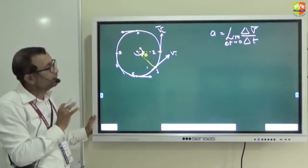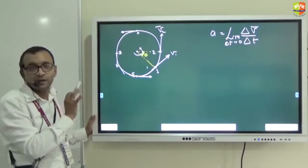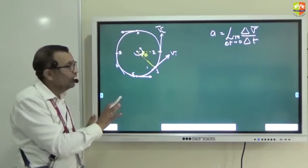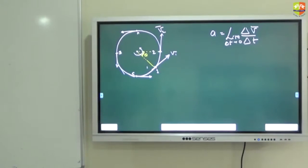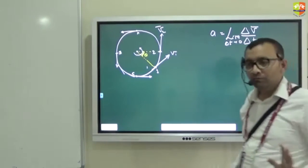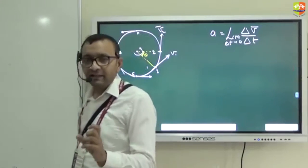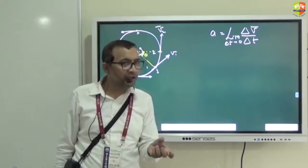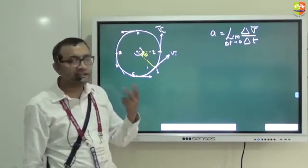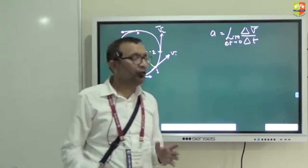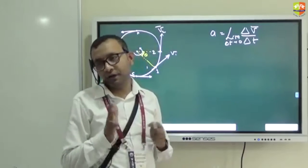This is very important, so I am going extremely slow. Now please draw the vector diagram showing v2 minus v1. Is the length of v1 the same as the length of v2? Length denotes the magnitude of a vector. My magnitude of velocity is fixed, so the length of v1 is the same as the length of v2. I want you to draw v2 minus v1 in a vector diagram.